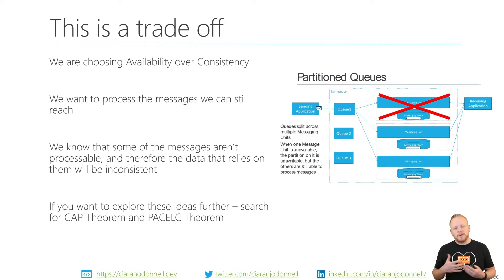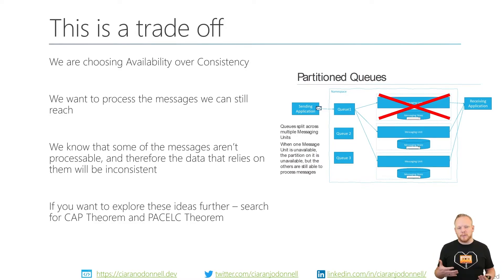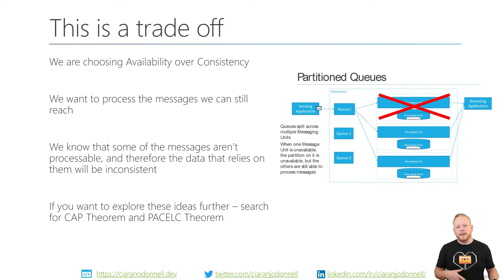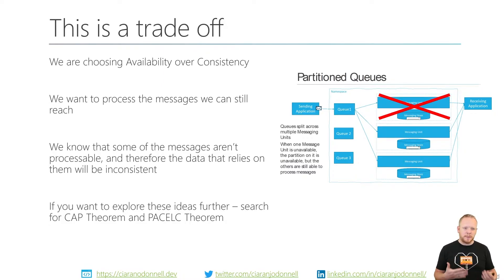We have this trade-off — we're really talking about choosing availability over consistency. We want to make sure that if there's any kind of messaging unit failure, we can still process messages coming across other messaging units. It's about trying to stay processing messages for as long as possible, even if we can't process all of them. This will potentially lower our consistency, because we'll be processing messages that may have been sent after some of the ones on the failed unit, and we'll be processing messages out of order. We need to make sure we're choosing to use this at the right time.